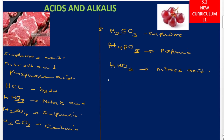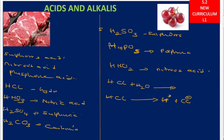Coming back to the definition: HCl, hydrochloric acid, when we add it to water, it is going to dissolve. When it dissolves, it produces hydrogen ions as positively charged ions. So HCl dissolves in water and breaks into H⁺ (hydrogen, positively charged) plus Cl⁻ (chloride, negatively charged). This positive hydrogen ion is what brings the acidic property to all substances we call acids.